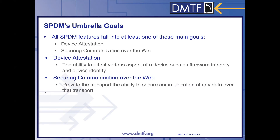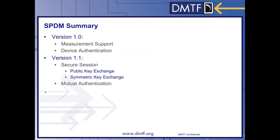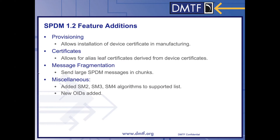To date, SBDM has these features. Starting at version 1.0, there was measurement support and device authentication. In version 1.1, secure session and mutual authentication was added. In 1.2, the new features are provisioning, certificates, message fragmentation, and miscellaneous things.